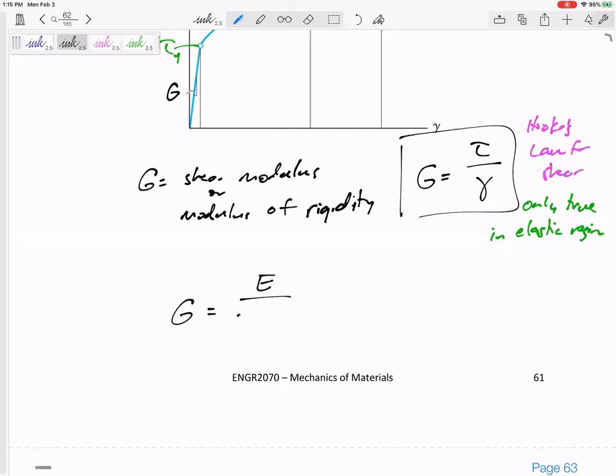G is equal to E over two times one plus nu. G is equal to E over two times one plus nu. So what does that mean for these three properties of a material? You only have to know two out of the three and you can calculate the third.